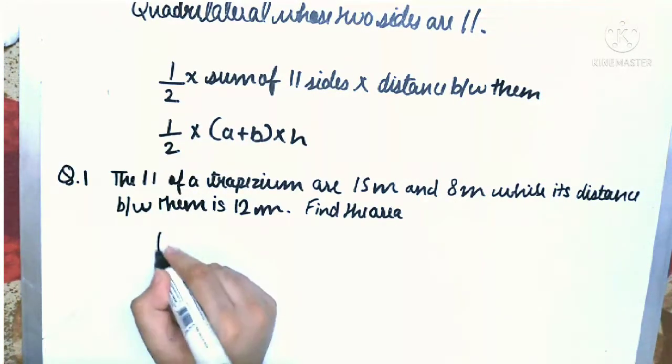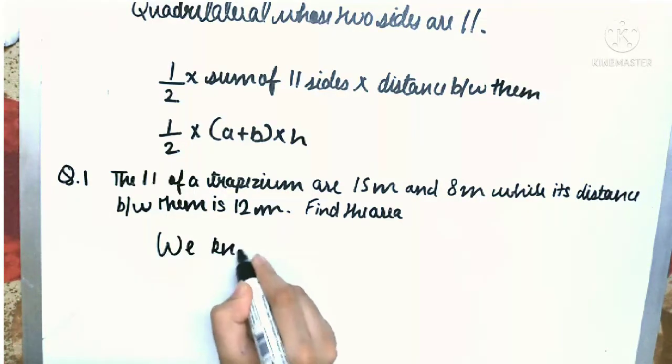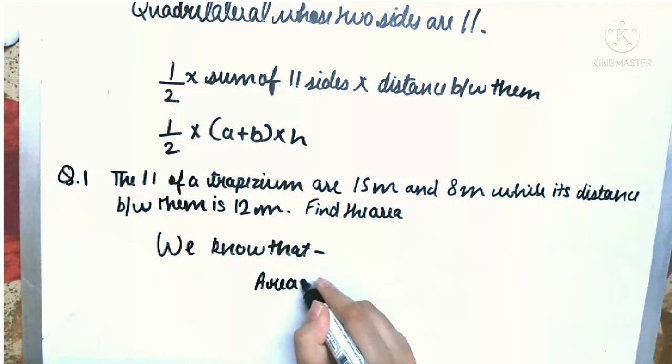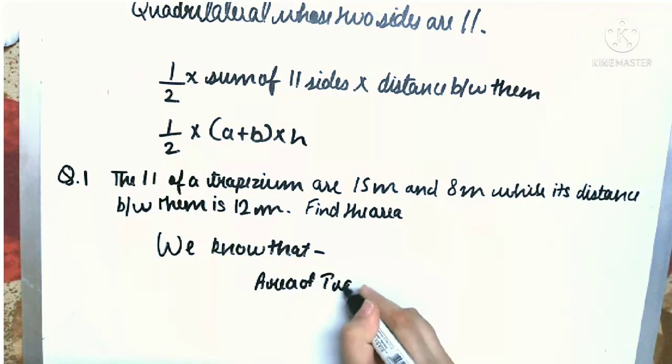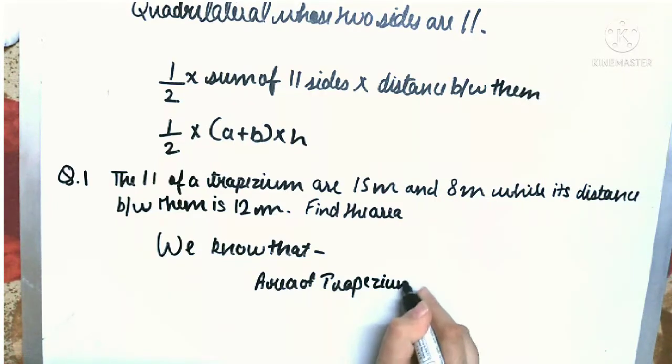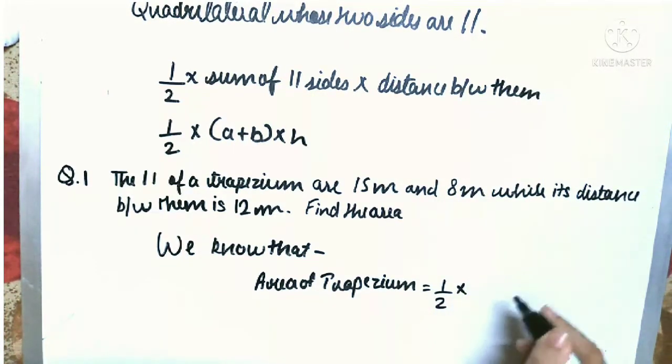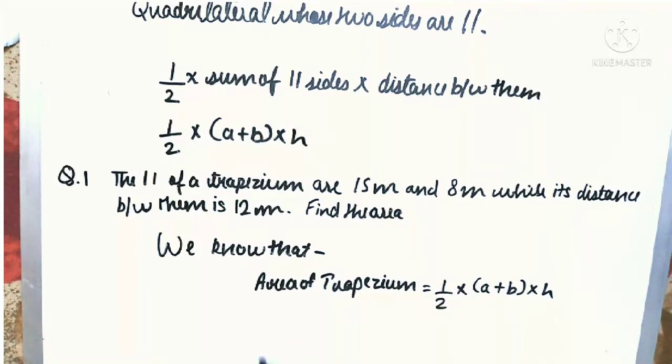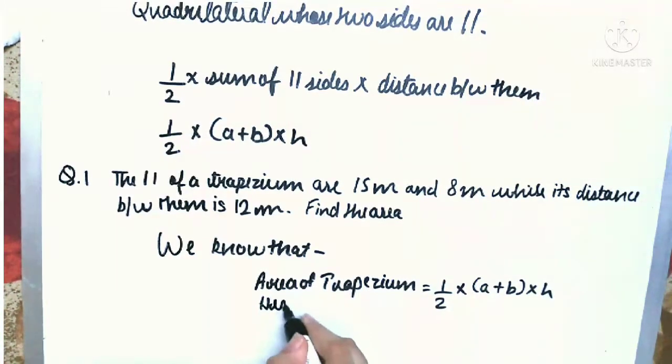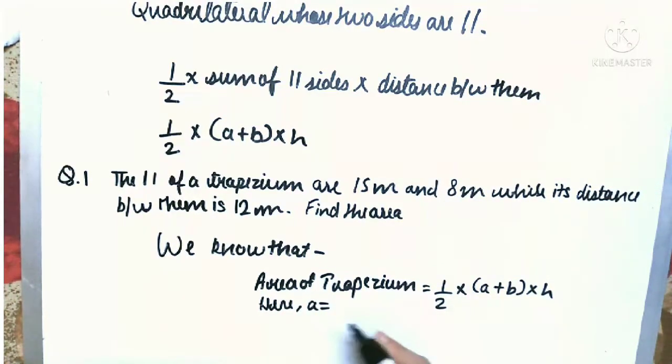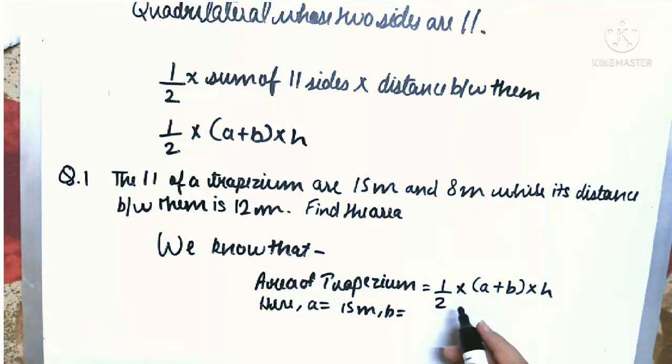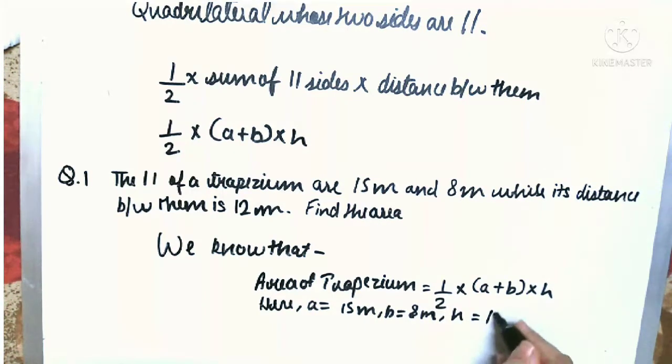In this case we know that area of trapezium is half into (a + b) into h. Here we are taking a as 15 meter, b as 8 meter, and h as 12 meter.